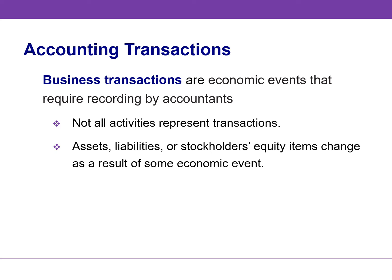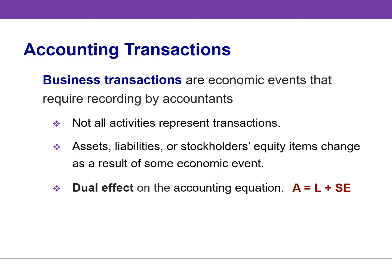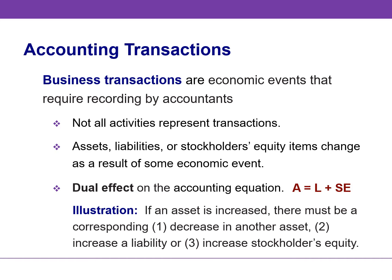For example, buying a computer and paying rent are events that change a company's assets, liabilities, or stockholders' equity. Each transaction has a dual or double-sided effect on the equation. For example, if an individual asset is increased, there must be a corresponding decrease in another asset or an increase in a liability or stockholders' equity item.